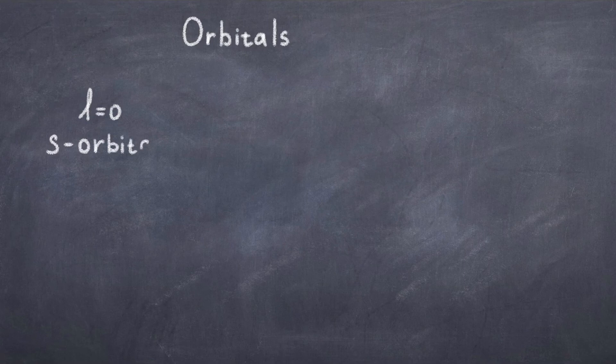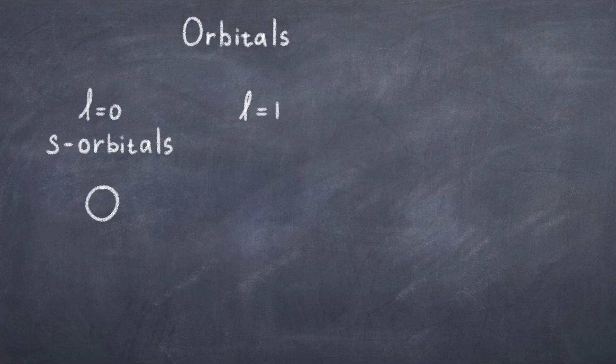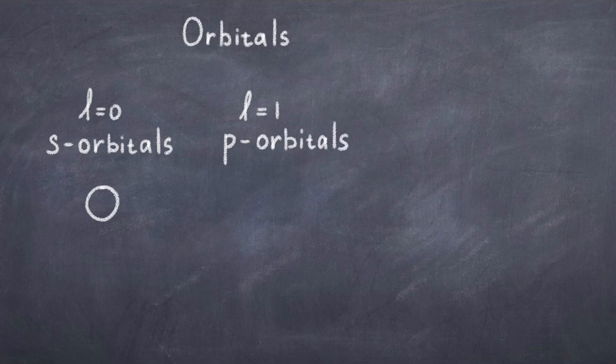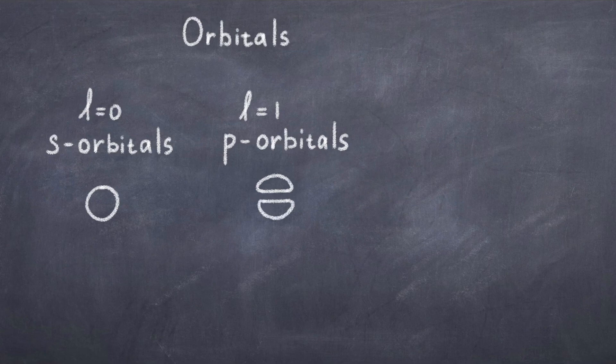The solutions where l is 0 gives the so-called s orbitals. These ones are the simplest orbitals and the electron can be in some specific spherical shell. If l is equal to 1, we get the p orbitals, which are like 2 clouds on each side. Going up to l equal to 2, we get even more complicated structures of orbitals.